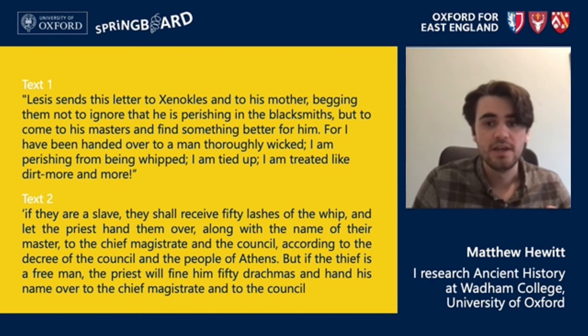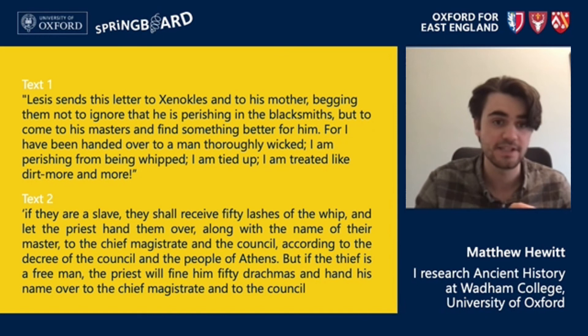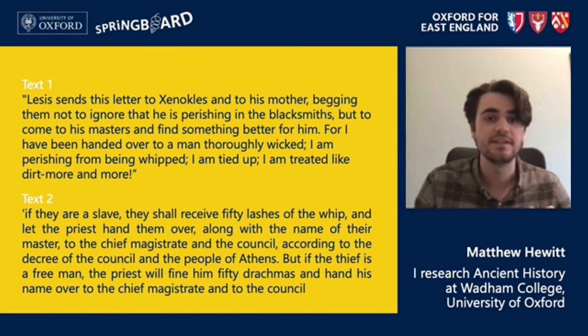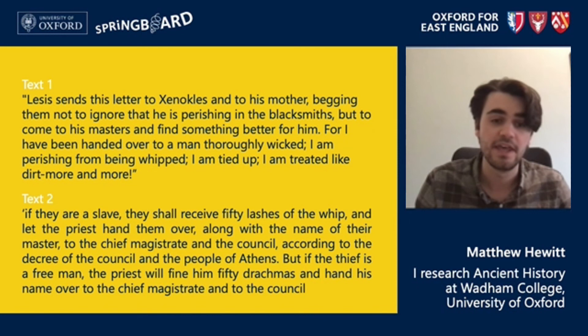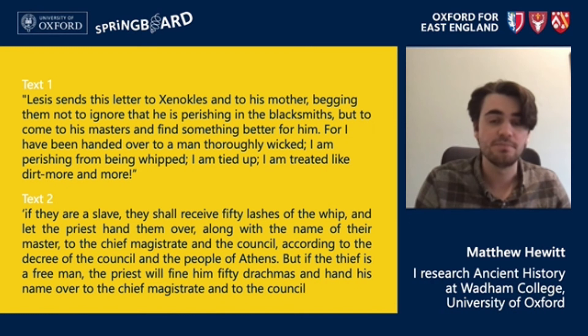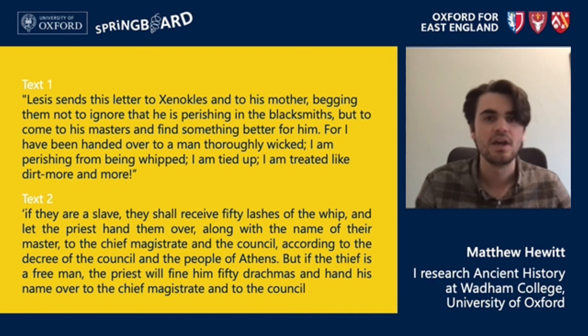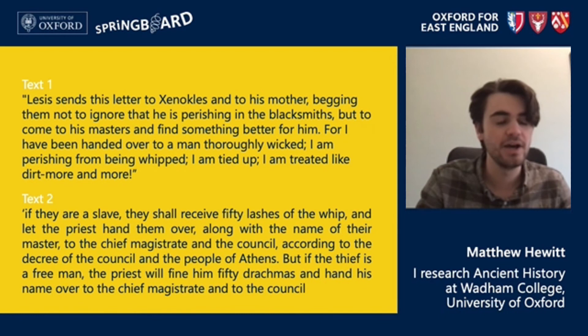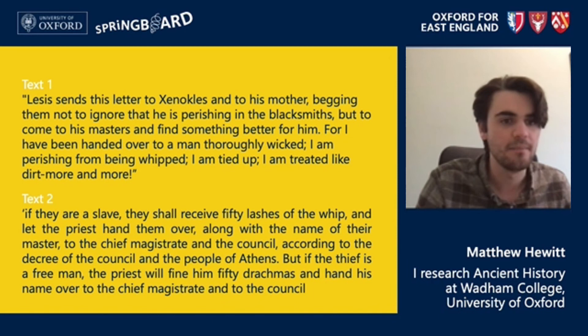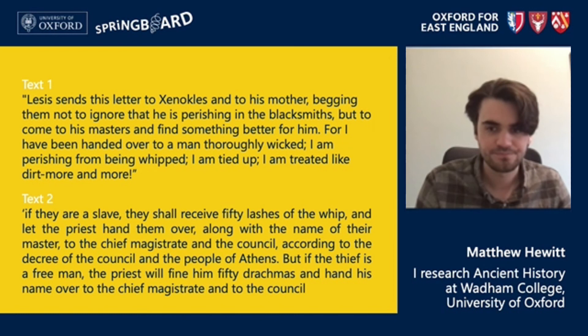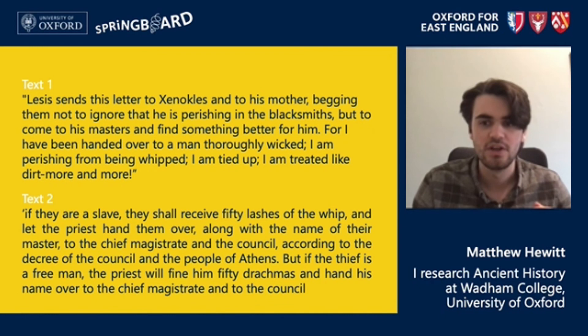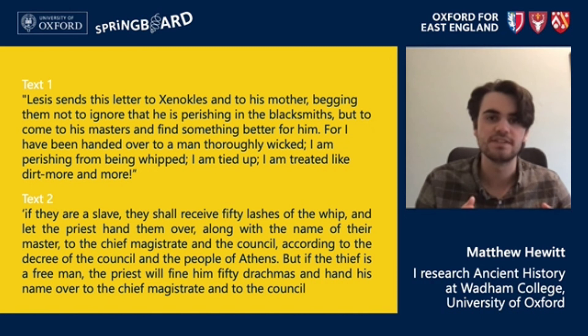What both texts reveal is the normalization of punishment — and of whipping in particular — of slaves in classical Athens. What's particularly interesting in text two is that it juxtaposes the punishment for the same crime committed by a slave and a free person: if committed by a slave, they receive 50 lashes of the whip; if a free person, they pay a fine of 50 drachmas. This says something about the mentality of the Athenians and the way they separated slaves and free people. It's also interesting that in the second text the name of the slave owner is to be passed on to the council — in a sense the slave owner is deemed responsible for their slave's actions — and all of this adds up to a dehumanizing of the slave in classical Athens.